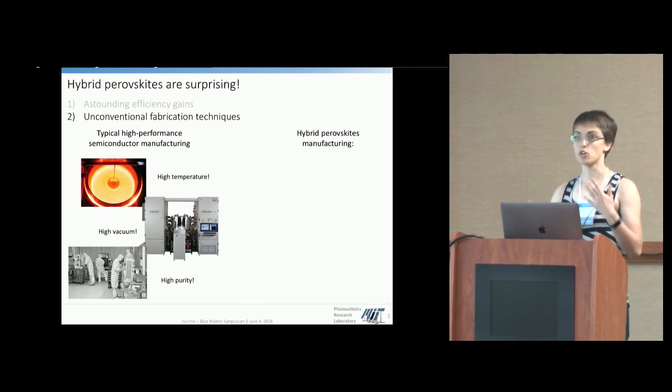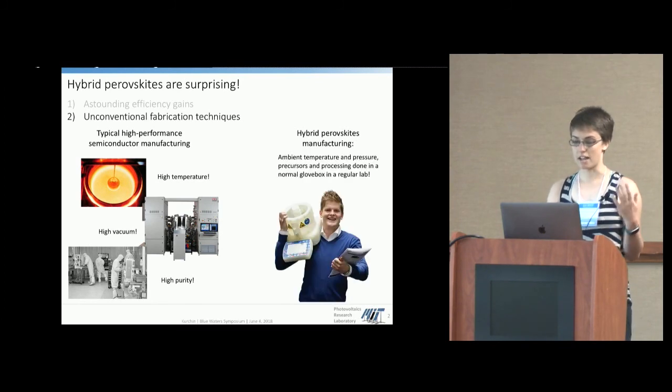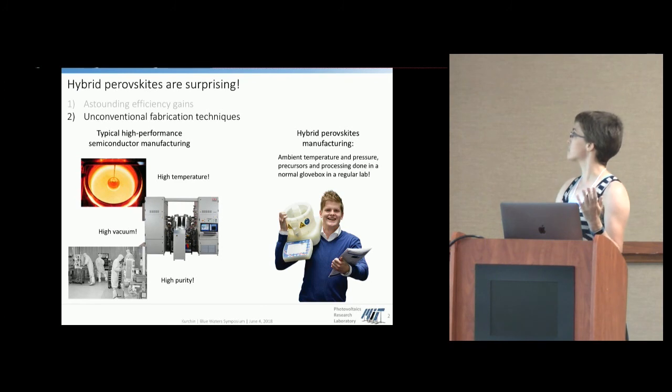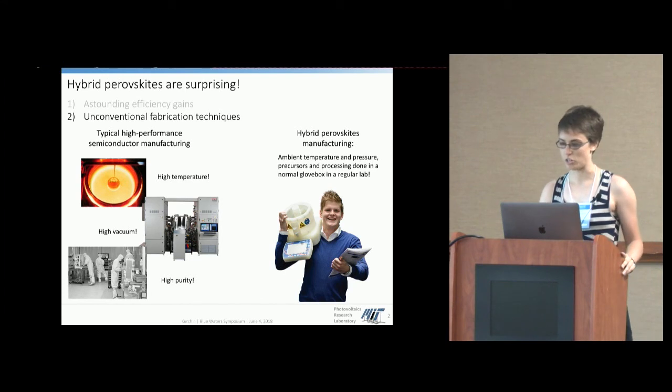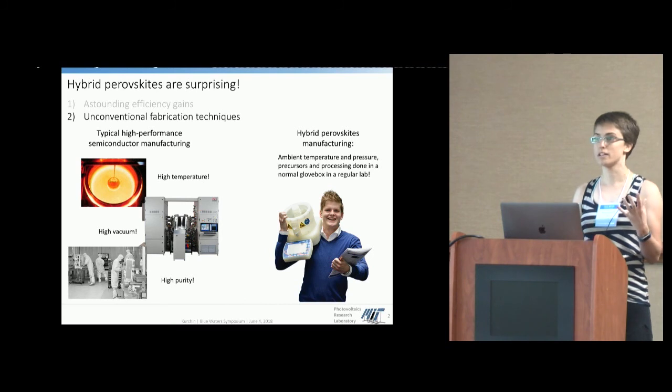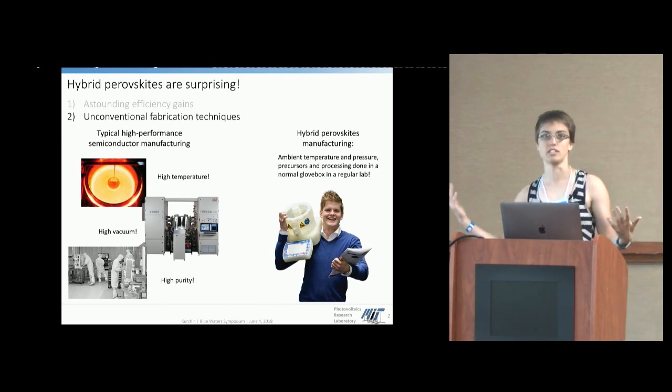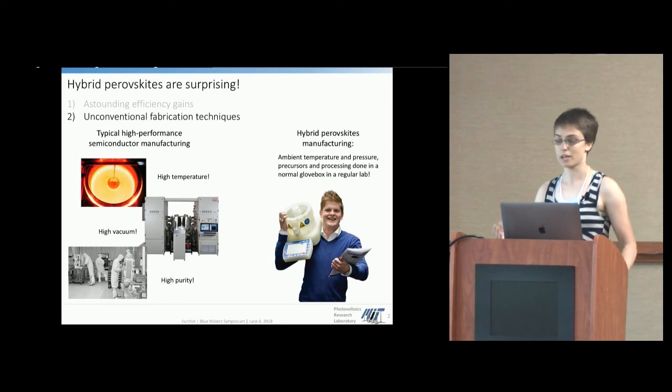And that means that sort of learning quickly what works and what doesn't work is very difficult. And compare that to the perovskites, which are made via a solution processing method. It can be done at ambient temperature and pressure. All the precursors can be mixed and the processing done in just a simple glove box in a regular laboratory. And the primary tool is, in fact, a spin coater. And I found this funny clip art of a very happy man holding a spin coater that I felt I should include. And so that kind of helps us start to understand how they've improved so quickly because there's a very low sort of financial barrier to entry to starting to do experiments in this field. The equipment is much cheaper. You can grow the materials very quickly. And that lets you learn very quickly what works and what doesn't work.